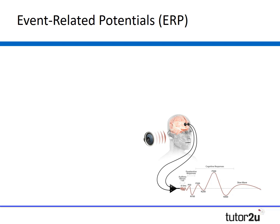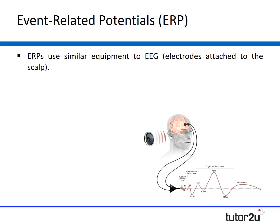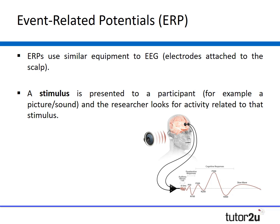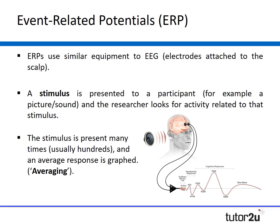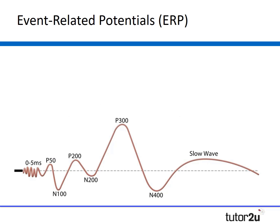A third and related technique is ERP, which stands for event-related potentials. It uses similar equipment to EEG — electrodes attached to the scalp — but the key difference is that a stimulus is presented to a participant, such as a picture or a sound, and the researcher looks for activity related to that specific stimulus. Because ERPs are difficult to separate from background EEG data, the stimulus is presented many times — usually hundreds or even thousands — and an average response is graphed. This procedure, known as averaging, reduces extraneous neural activity so that the specific response to the stimulus stands out.